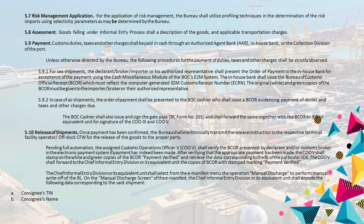5.9 Payment. Customs duties, taxes, and other charges shall be paid in cash through an authorized agent bank (AAB), in-house bank, or the collection division of the port. Unless otherwise directed by the Bureau, the following procedures for the payment of duties, taxes, and other charges shall be strictly observed. 5.9.1 For sea/LCL shipments, the declarant, broker-importer or his authorized representative shall present the order of payment to the in-house bank for acceptance of the payment using the cash miscellaneous module of the BOC's E2M system.